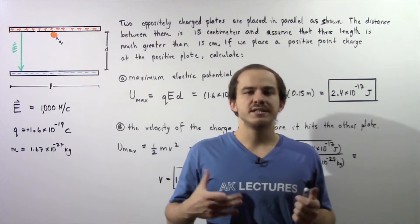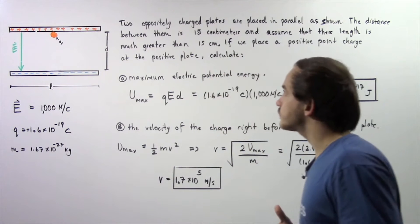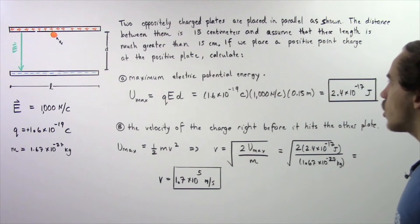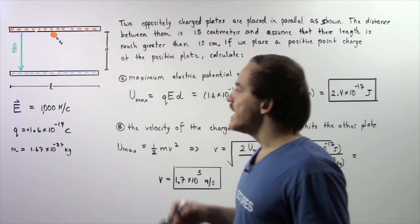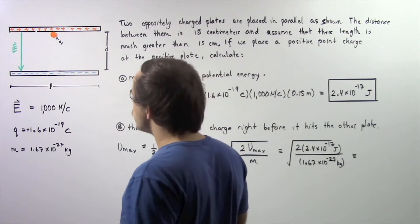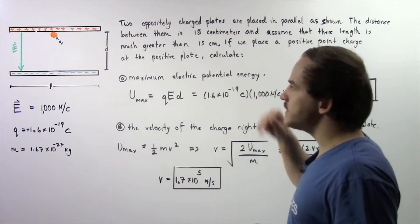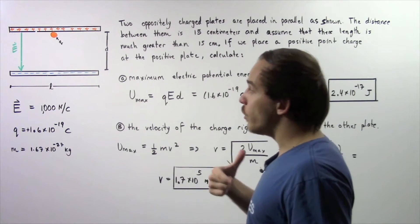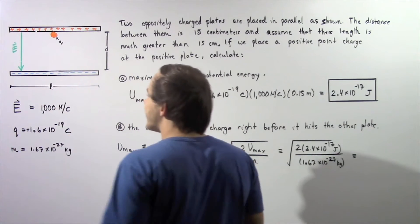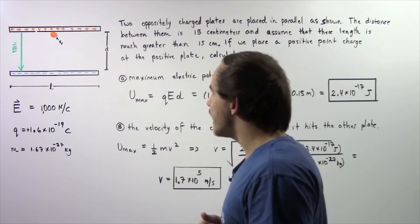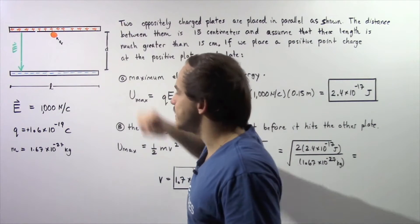Let's look at the following example that deals with electric potential energy. Two oppositely charged plates are placed in parallel with one another as shown. The distance between our two plates is given by D and that's equal to 15 centimeters. We assume that the entire length of the plate given by L is much greater than the distance between them, so L is much greater than D.